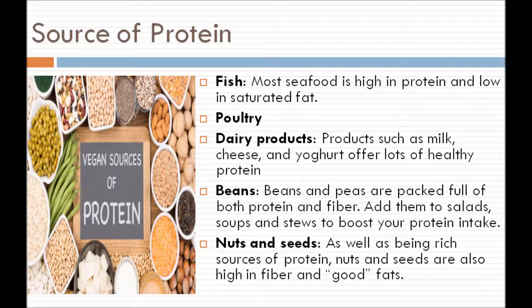Most seafood is high in protein and low in saturated fat. Poultry. Dairy products such as milk, cheese and yogurt offer lots of healthy protein. Beans and peas are packed full of both protein and fiber. Add them to salads, soups and stews to boost your protein intake. Nuts and seeds, as well as being rich sources of protein, are also high in fiber and good fats.